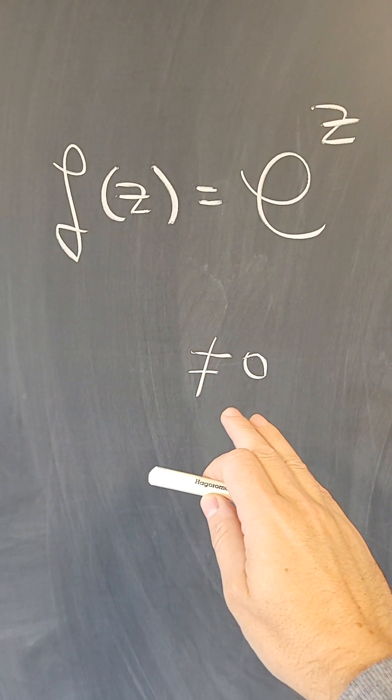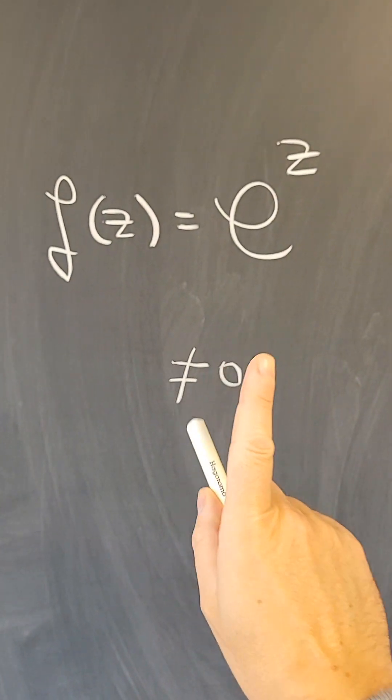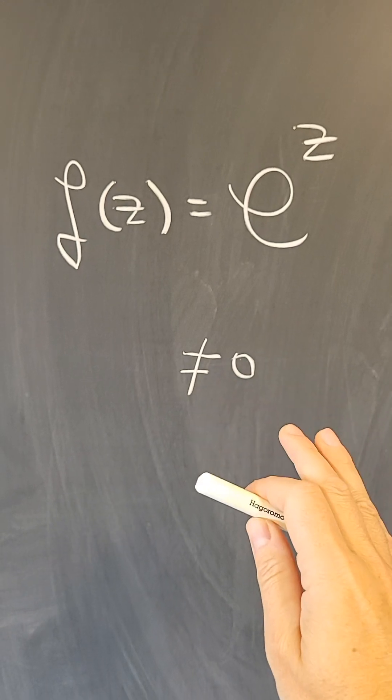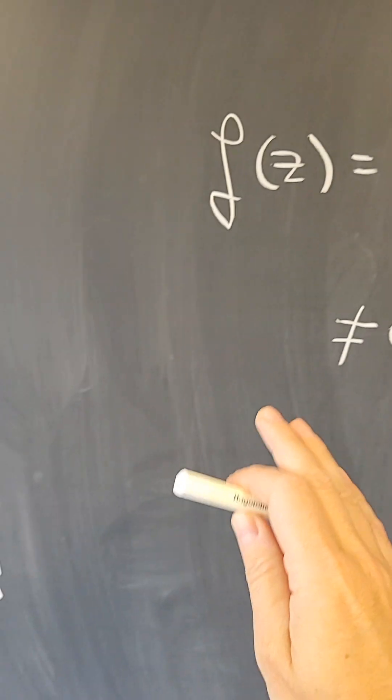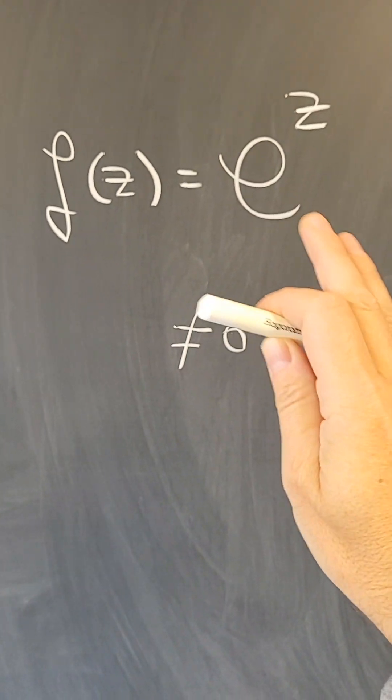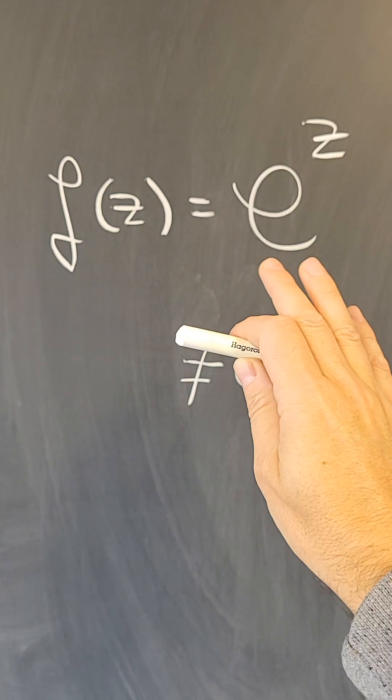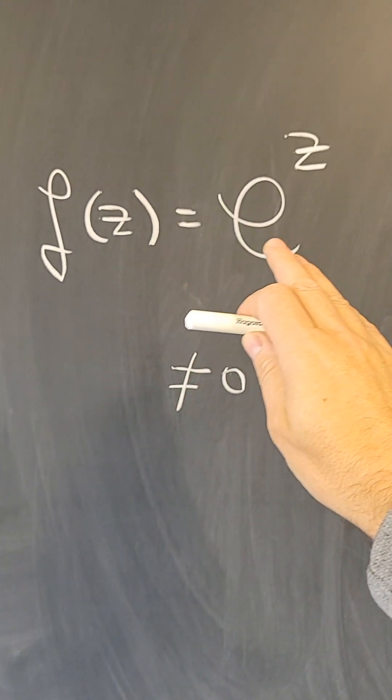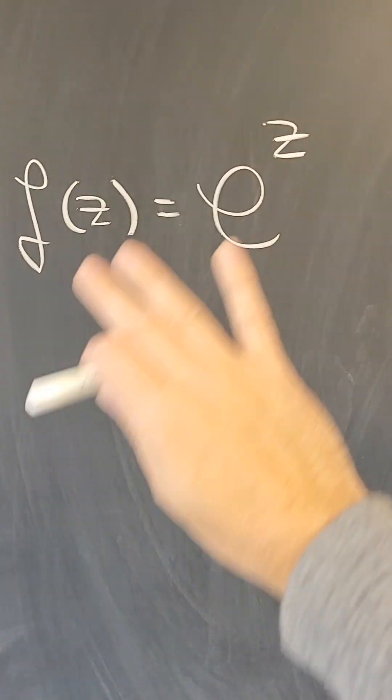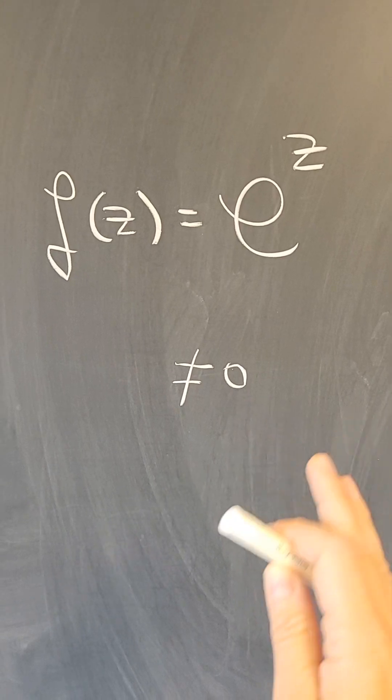So this function does miss one value but is still an entire function. However, if it missed just one more value, it would be constant, but we know this is not constant. So actually, the exponential reaches every other complex number except zero.